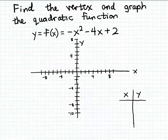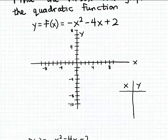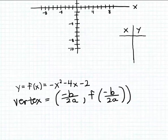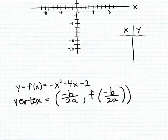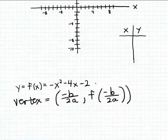There are a couple of ways to find the vertex of a quadratic function, but one way is to use a formula. Here's the formula for finding the coordinates of the vertex of a parabola. Applying this formula requires knowing the coefficients a, b, and c: a is the leading coefficient (the coefficient of x²), b is the coefficient of the x term, and c is the constant term.